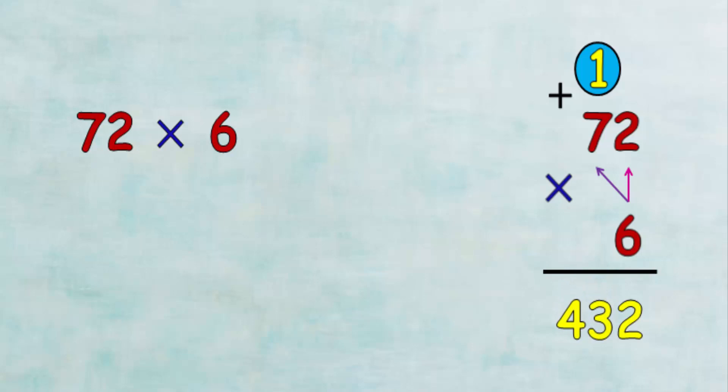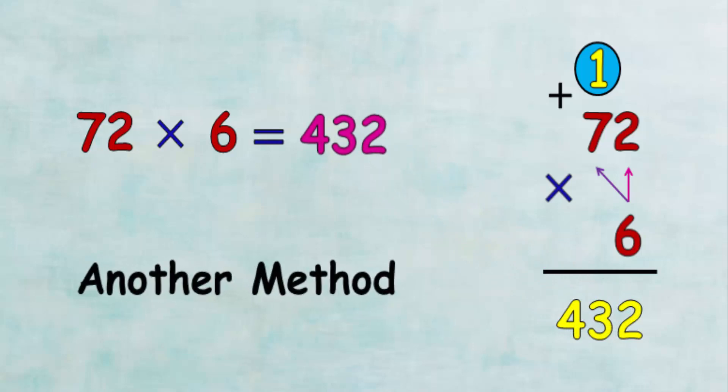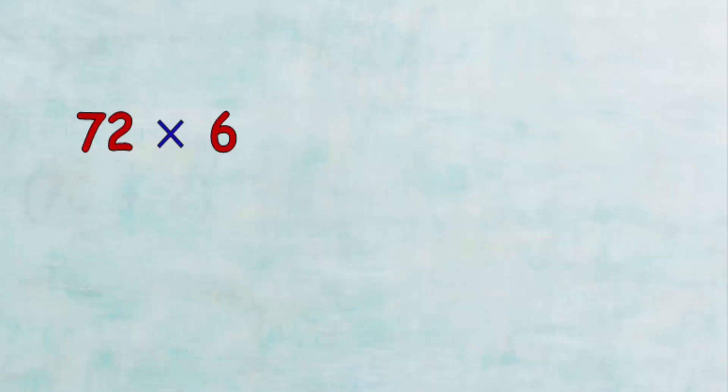Therefore the product of 72 by 6 is 432. Let's see another way to solve it.